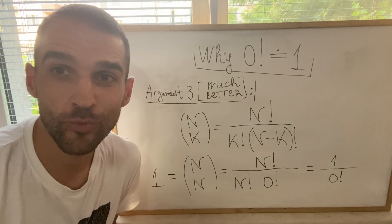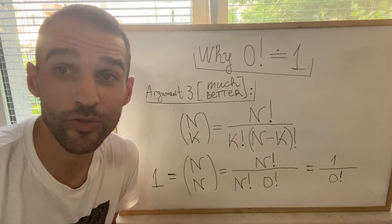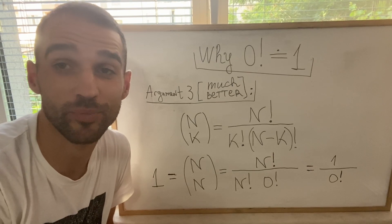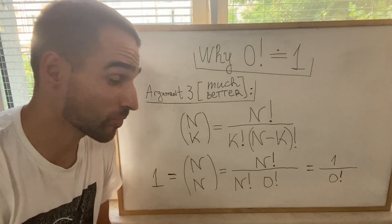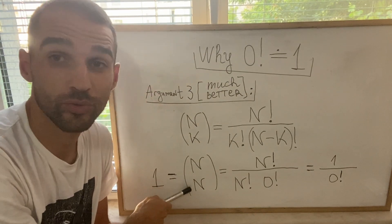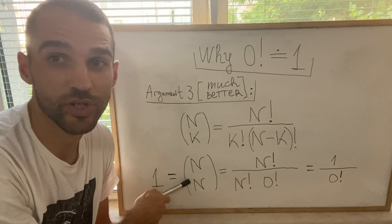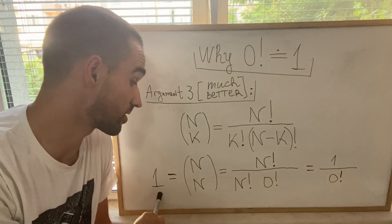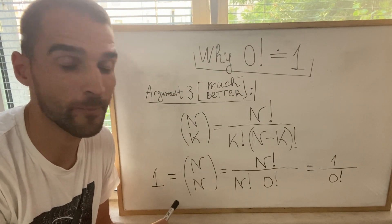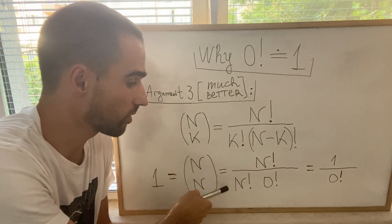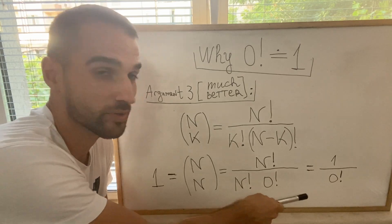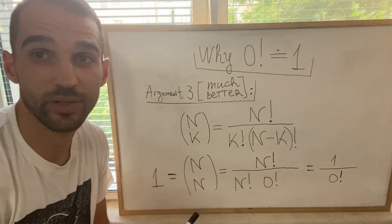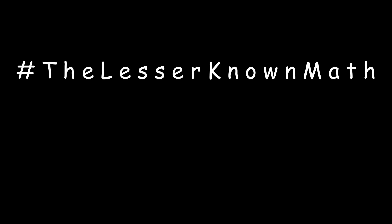Let's put philosophy aside and give a better argument using combinations. n choose k is defined as n factorial over k factorial times (n minus k) factorial. When k equals n, we are choosing n objects out of n objects, and the answer is clearly 1 — there's only one way to do it. Plugging into the formula, we get n factorial over n factorial times 0 factorial, which simplifies to 1 over 0 factorial. Since this must equal 1, we get directly that 0 factorial is 1.